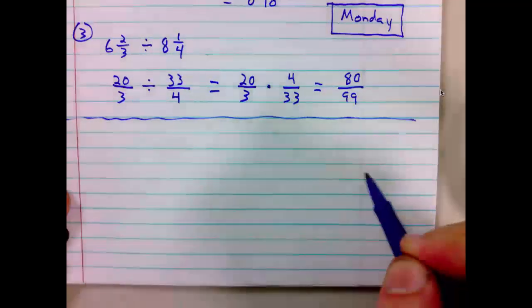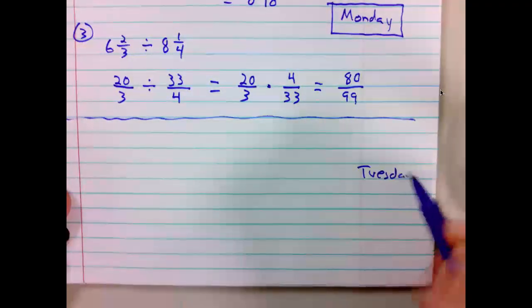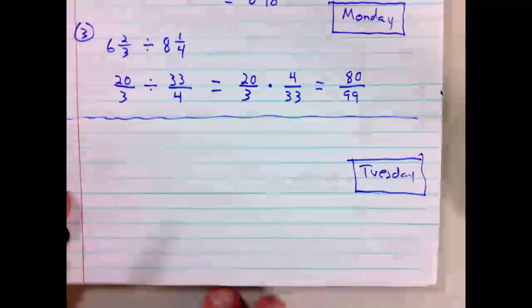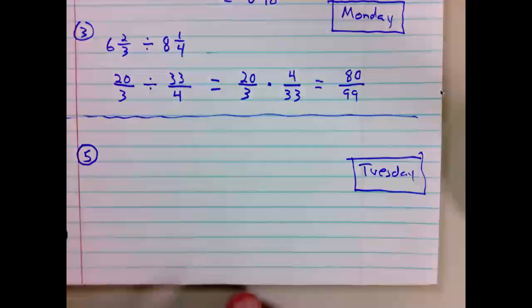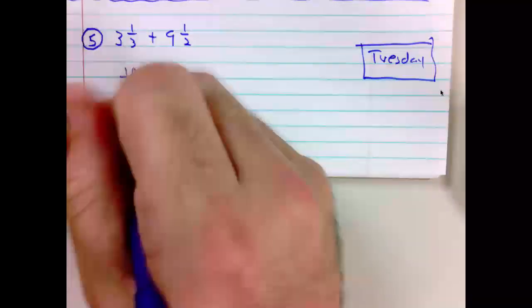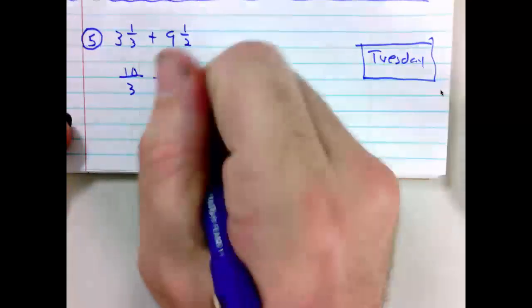Moving on to Tuesday. The next problem we will look at is number 5. Number 5 says 3 and 1 third plus 9 and 1 half. 3 and 1 third plus 9 and 1 half. Again, we will convert these mixed numbers to improper fractions. 3 times 3 is 9 plus 1 is 10. 10 over 3. Plus 9 times 2 is 18, plus 1 is 19. 19 over 2.